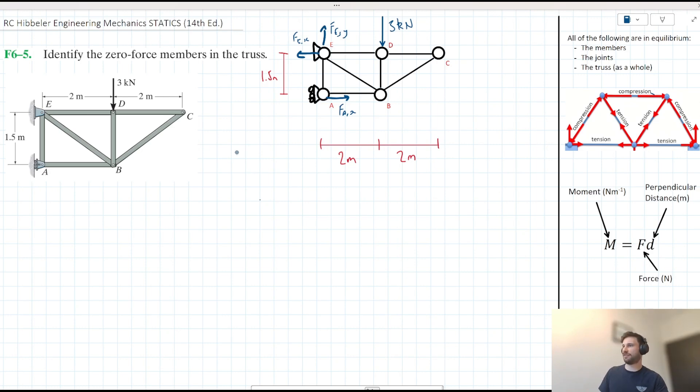We note that FE,Y by inspection is equal to 3 since it's countering this 3kN force acting down on joint D here. And we can also note that FE,X is equal to FA,X here.